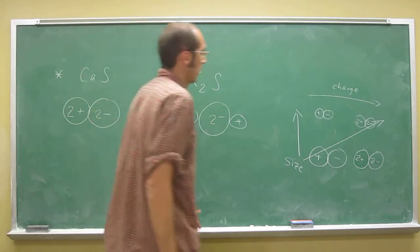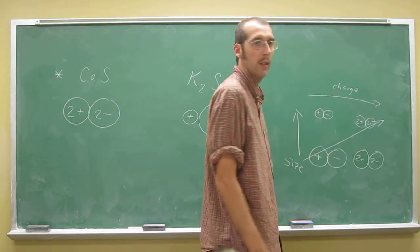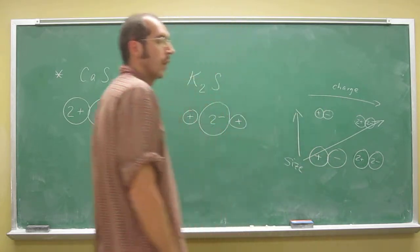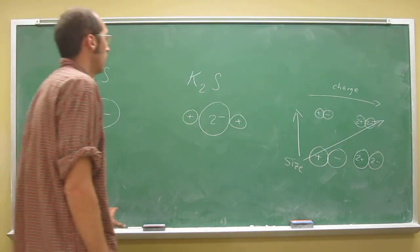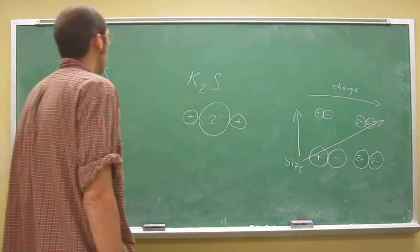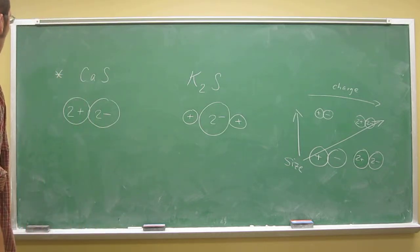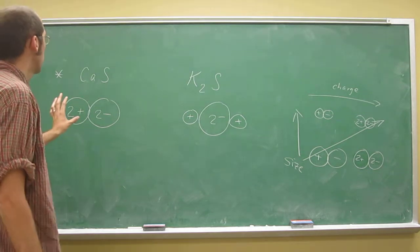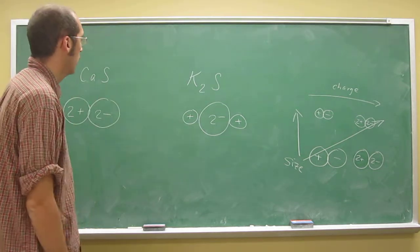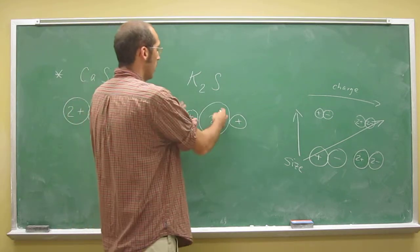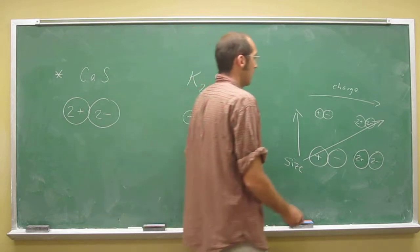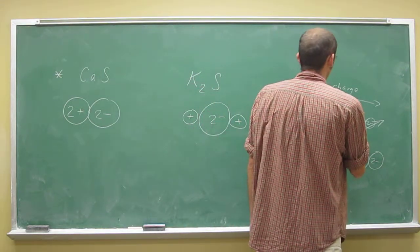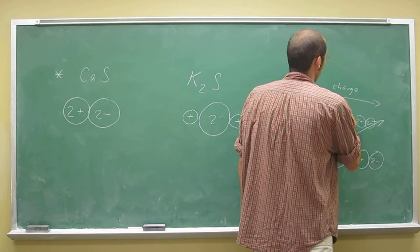When we're talking about size and charge relative to strength of ionic bond, we have to recall that both play a part. In this case, we find that the overall charge here is more than there. So the charge difference of the minus 2 to plus 1 sets you somewhere in this range.